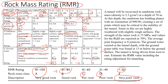What we're going to do now is look at an example and see how we can use rock mass rating to estimate the properties of rock mass, and also talk about the tunnel applications. We'll start with the strength. It says the strength of the intact rock mass is 75 MPa.